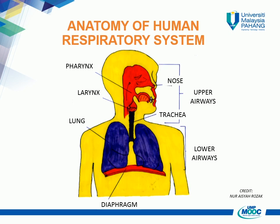The respiratory system works in partnership with the circulatory system to make sure every cell in the body receives oxygen and is able to get rid of its waste carbon dioxide. The respiratory system takes up most of the space in the chest. The lungs and the lower part of the airways are enclosed and protected by the ribs. Muscles in the rib cage contract and relax as we breathe in and out. A large muscle under the lungs called the diaphragm also contracts and relaxes as we breathe.